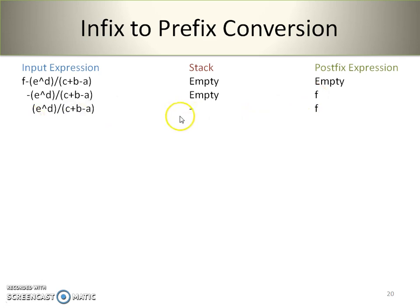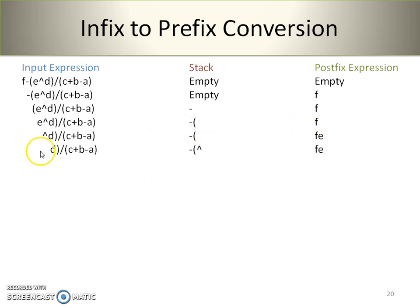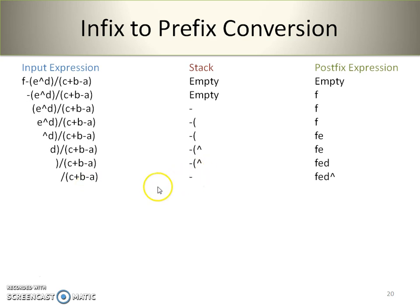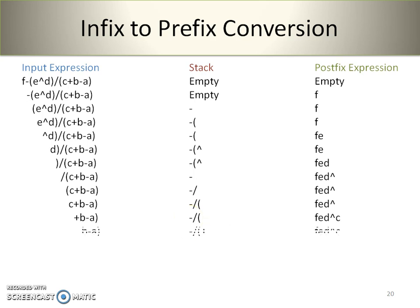The minus operator is pushed onto the stack. The opening bracket is pushed onto the stack. E is put onto the postfix expression. The exponent operator is pushed onto the stack. D is placed on the postfix expression. A closing curly bracket triggers pop operations until the opening bracket. The division operator has greater precedence than the top of the stack, so it is pushed onto the stack. The opening bracket is pushed. C is put on the postfix expression. The plus operator is pushed onto the stack. B is placed in the postfix expression. Now the minus operator is scanned.